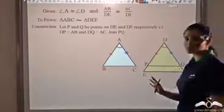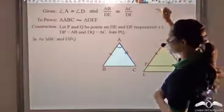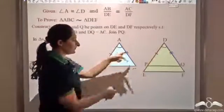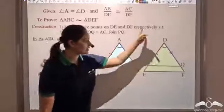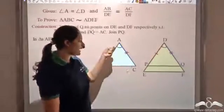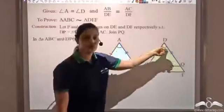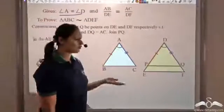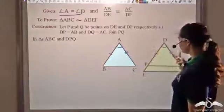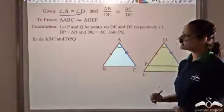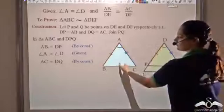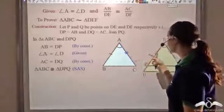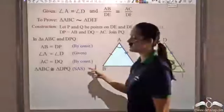So now let us look at triangles ABC and DPQ. In these two triangles, AB equals DP (one side), AC equals DQ (second side), and between these two sides the included angle A equals D, which is given. These sides are equal by construction. So I have side, angle, side — the included angle. Hence these two triangles are congruent by SAS.